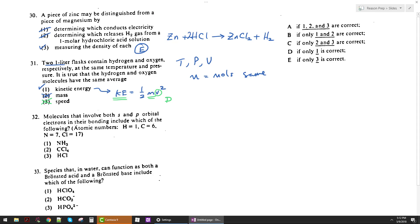Molecules that involve both S and P orbital electrons in their bonding include which of the following? Well, let's take a look at these. We know NH3, each H is 1S1. Each N is going to be 1S2, 2S2, 2P3. So when these bond, H's S orbitals and N's P orbitals, which are both unfilled, are going to get involved in that bonding. So yes, one does include both S and P orbital bonding.